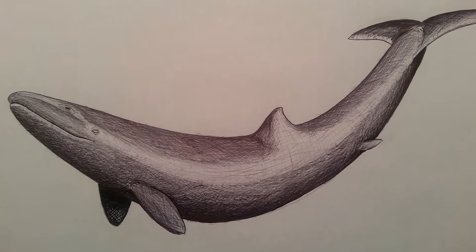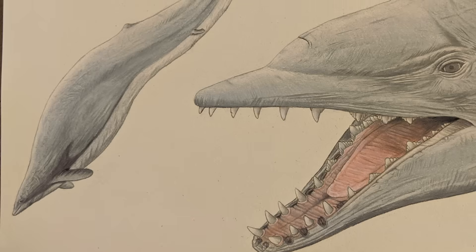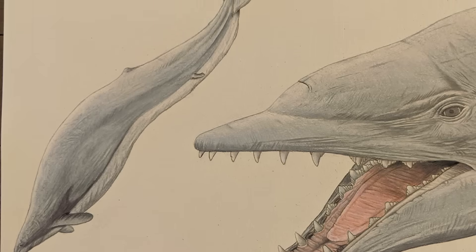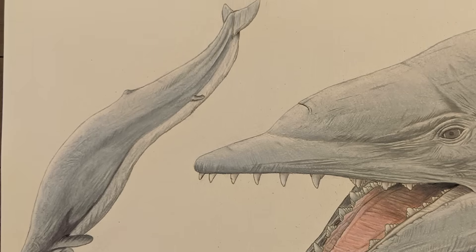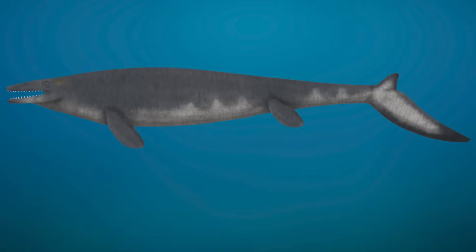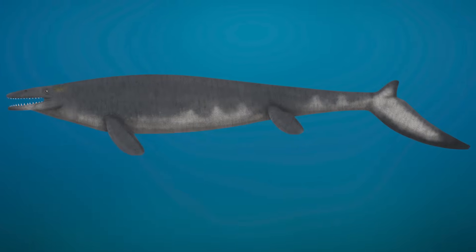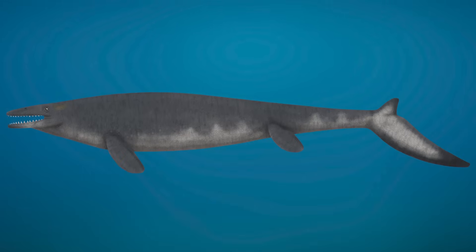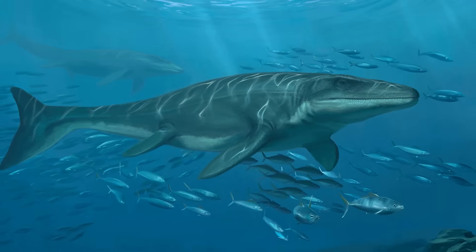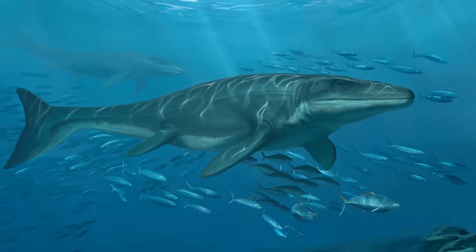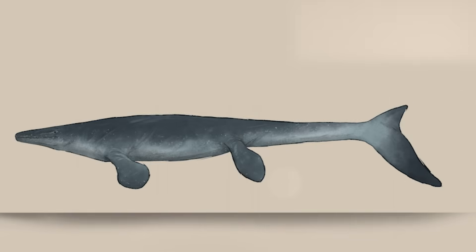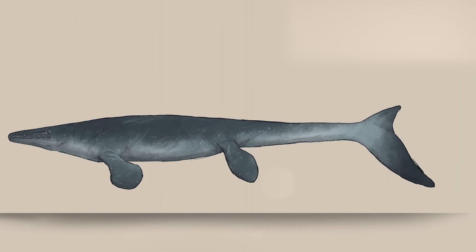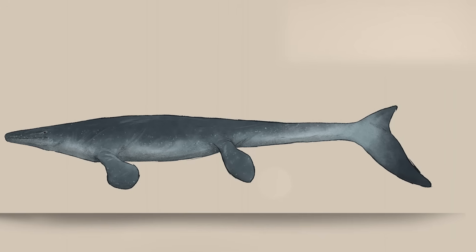Like most toothed whales, Basilosaurus was primarily an active predator, though it would not have been above scavenging free meals. Analysis of the skull shows that Basilosaurus did not have room for a melon — the mass of adipose tissue in the forehead of modern toothed whales responsible for modulating and focusing vocalizations for echolocation and communication. Because of this, it is believed that Basilosaurus could not echolocate, and it probably wasn't as social as many modern whale species.